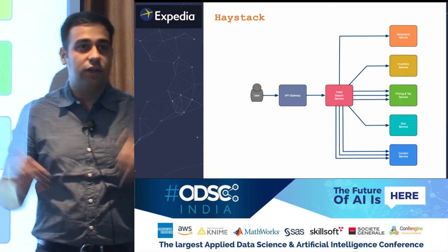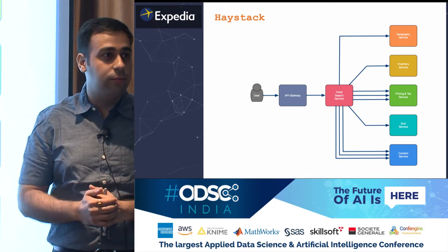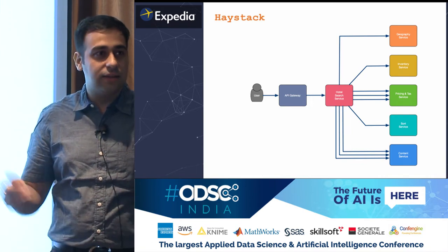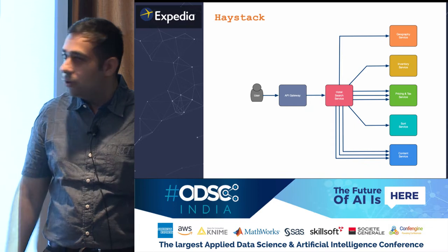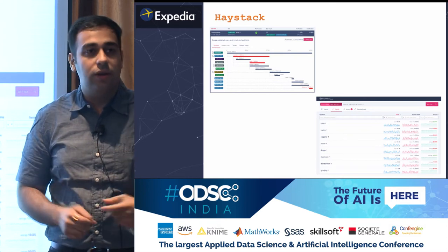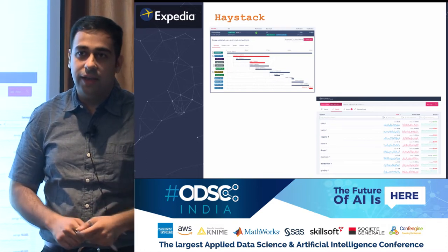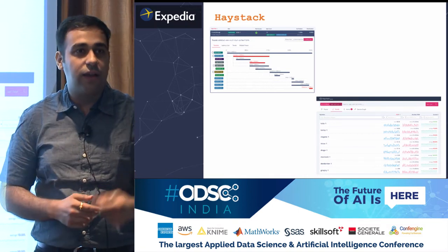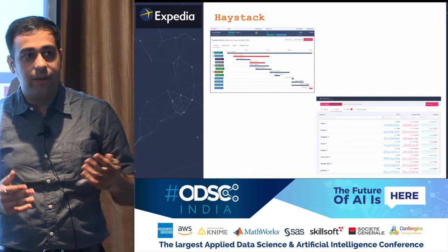If someone tries to search for a hotel at Expedia.com, to serve that one single customer request, there are a plethora of microservices running behind the scene — such as content service, pricing service, and inventory service. Haystack helps visualize the entire customer request in a waterfall view, as you can see in the top-left diagram. The entire customer request is called a trace, and the interacting services within that request are called spans. Haystack also aggregates this data to form vital service health trends, such as failure counts or latency metrics, depicting the behavior of each service.